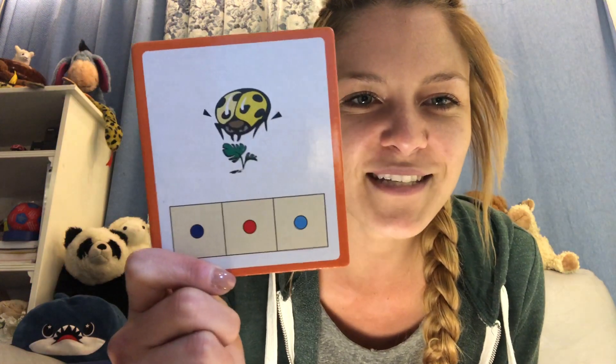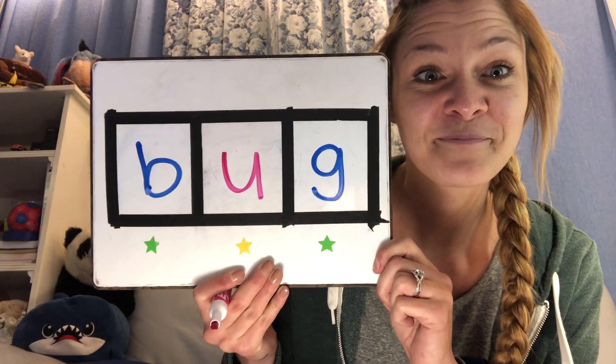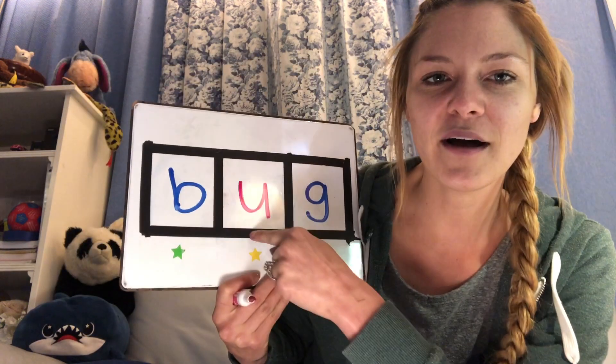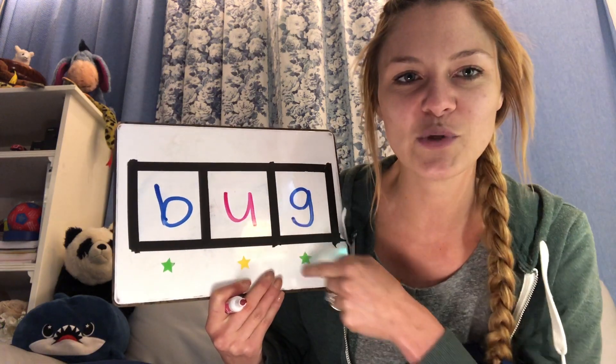Let's do one more with the last vowel we haven't used yet. This is a bug. Can you say bug? Now think of those three sounds in the word bug and try to write them. Did you get B-U-G? Bug.